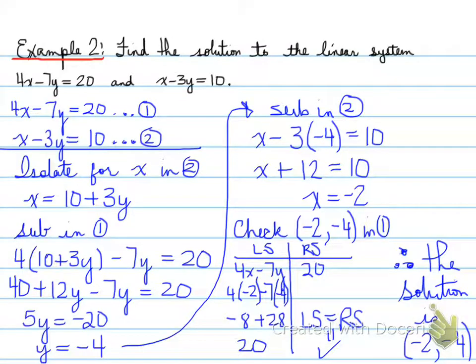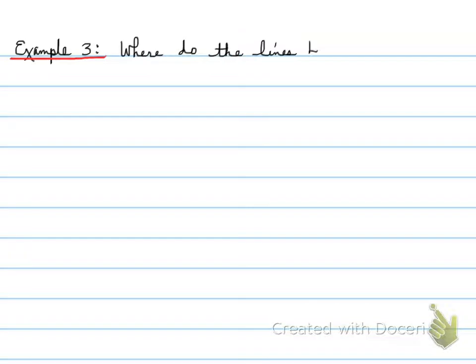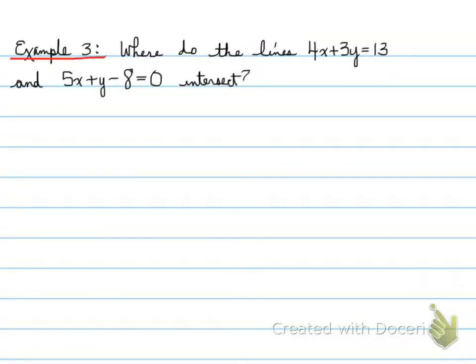We're back. Let's move on to example number three. Example number three asks: where do the lines 4x plus 3y equals 13 and 5x plus y minus 8 equals 0 intersect? We're going to answer this question.